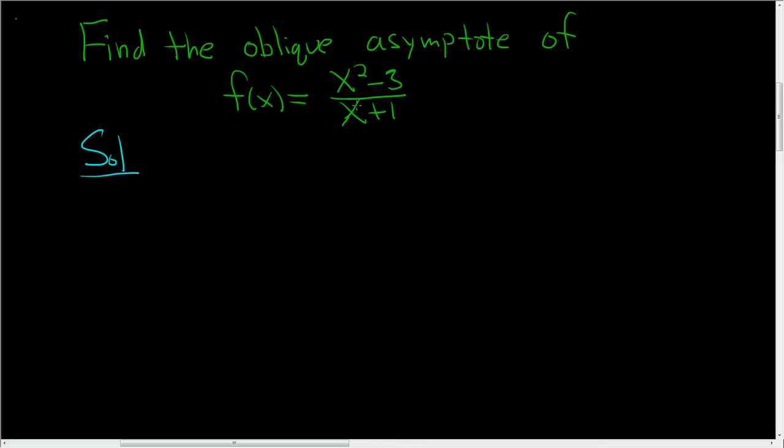We know it has an oblique asymptote because the degree in the denominator is 1 and the degree in the numerator is 2, so it's exactly 1 larger. Whenever it's exactly 1 larger like this, you will always have an oblique asymptote.